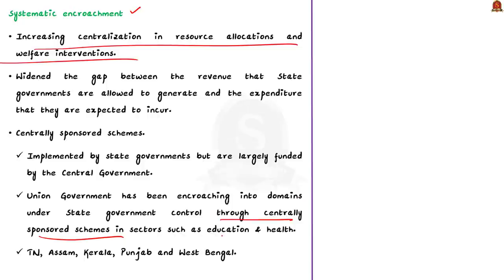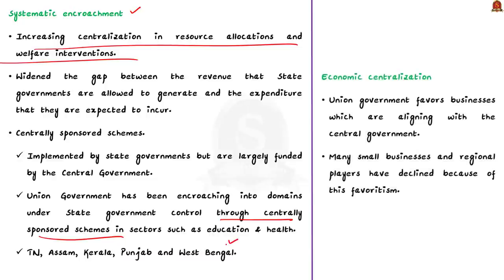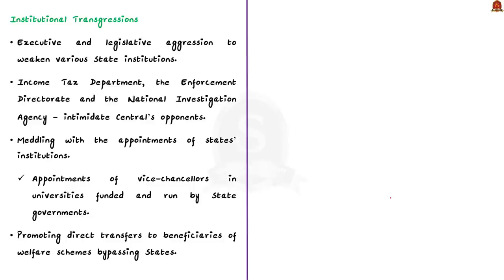This sort of encroachment is particularly visible in states like Tamil Nadu, Assam, Kerala, Punjab and West Bengal. Moving to the centralization of economic power, according to the author, the current union government favors businesses aligning with the central government. Only big business groups favoring the union government are expanding, while many small businesses and regional players have declined due to this favoritism, eventually leading to centralization of economic power.